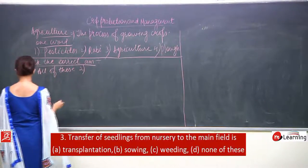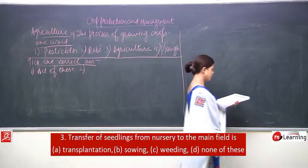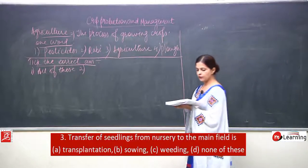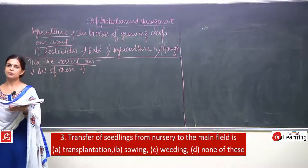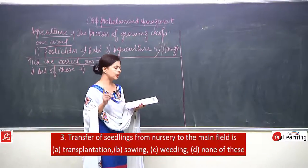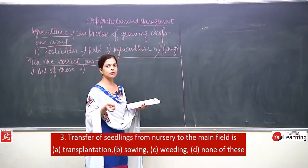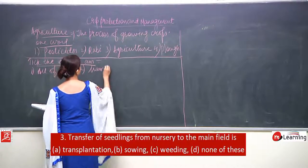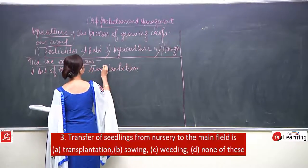Number 2: transfer of seedlings from nursery to the main field. It is grown in the nursery and then brought to the field. The options are: A — transplantation, B — sowing, C — weeding, D — none of these. The answer is transplantation.